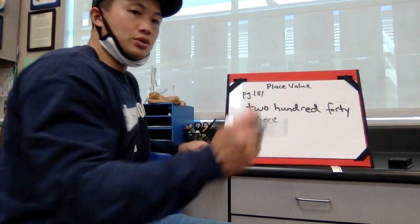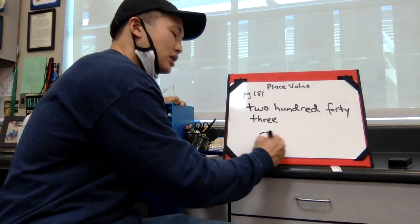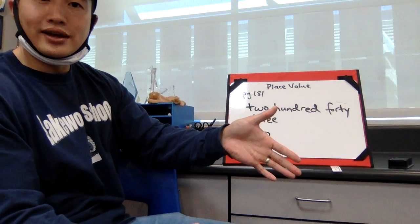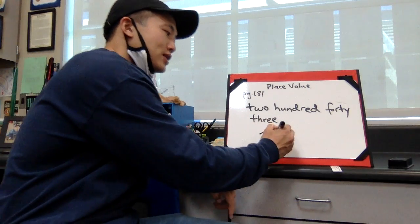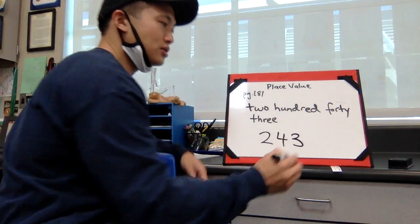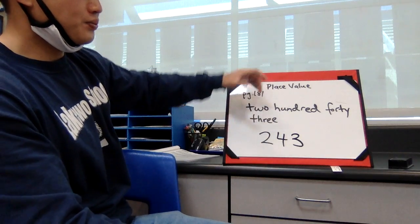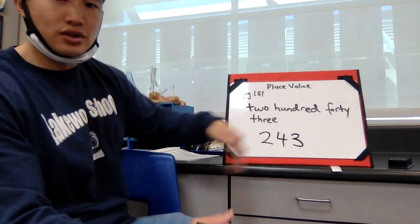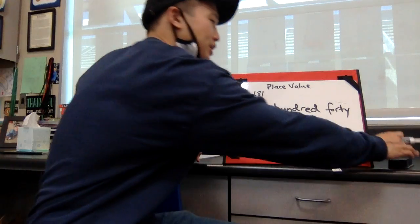So two hundred. I know that there's two hundreds, so I'll write two first. Forty. Forty we know is a way that we can count tens, so four in the tens place value. And then three is our ones place value. So when we write this down as a conversion, 243 should be represented as 243.